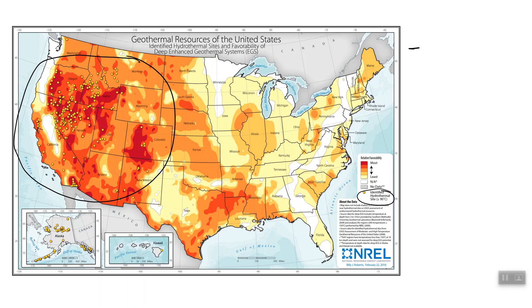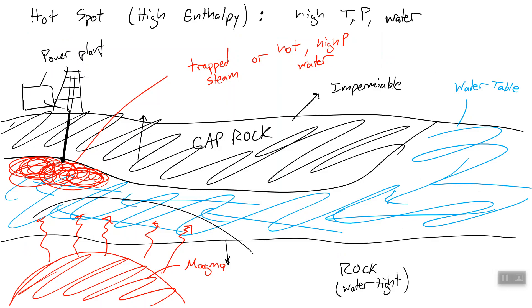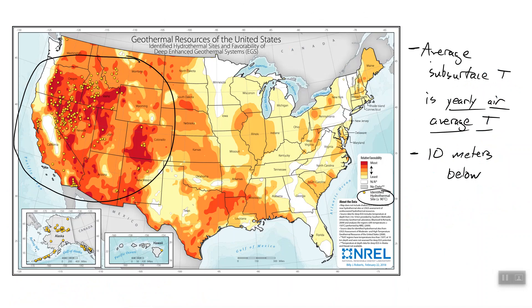Also, more related to the low temperature lecture next time is the average subsurface temperature. Anywhere in the United States is actually equivalent to the yearly air average temperature. So if you average the temperature at every day of the year over an entire year period, you'll find the average temperature of the earth, of the subsurface earth, and that's at about 10 meters below.